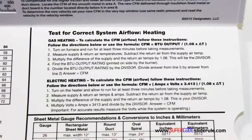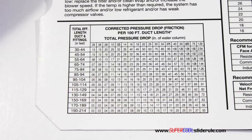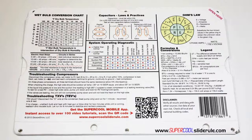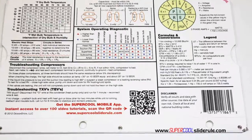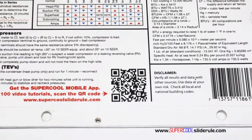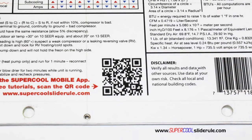It has step-by-step directions for determining airflow through a gas furnace, electric furnace, or an air conditioning unit. It has pressure drop multipliers for ductwork as well as recommended velocities. And finally, scanning this QR code gives instant access to over 100 tutorials to assist the technician with every test and repair imaginable.